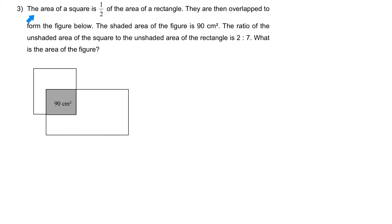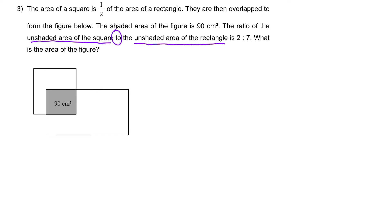Question 3: the area of a square is half of the area of a rectangle. They are then overlapped to form the figure below. The shaded area of the figure is 90 cm². The ratio of the unshaded area of the square to the unshaded area of the rectangle is 2 to 7.